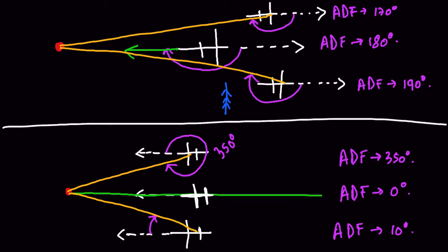The key idea is that relative bearing is always measured from the nose of the aircraft in the clockwise direction to the bearing towards the station. Whenever solving questions, draw a picture because it's always easier with a pictorial representation.